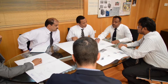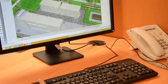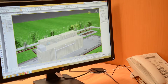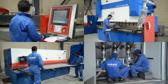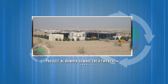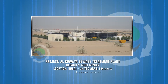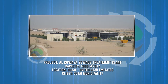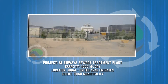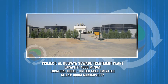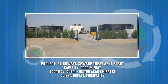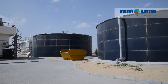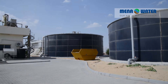fabrication and construction within the agreed time frame, as per client requirements. The project — Al-Ruwaya Sewage Treatment Plant — is equipped with state-of-the-art membrane technology as a containerized solution. This plant is designed to treat 4,000 cubic meters per day of domestic sewage,